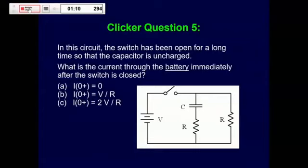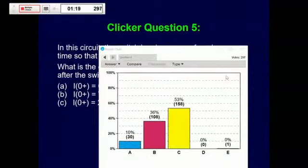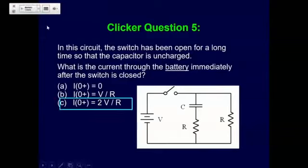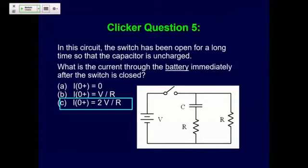There's definitely some controversy here. The majority opinion was answer C, but a lot of people were thinking B. Let's talk about what they were thinking. A student explained that when the switch is closed, you treat the capacitor as a wire, so you have two paths in parallel — the two resistors are in parallel with each other. That's a great way to think about it.